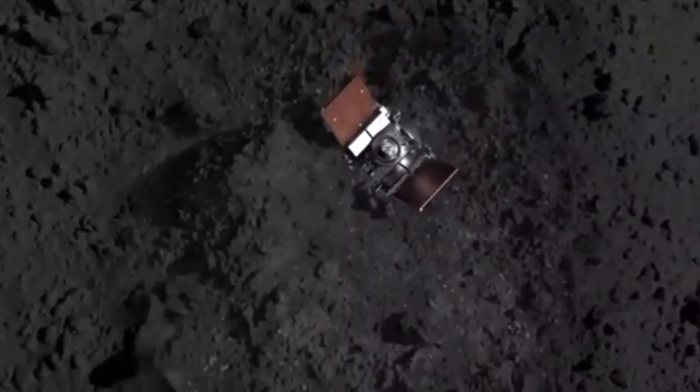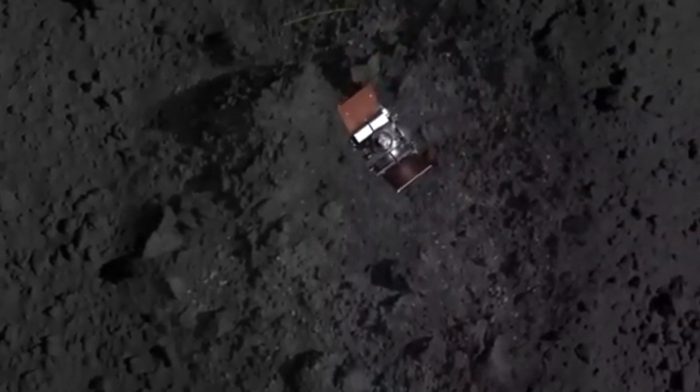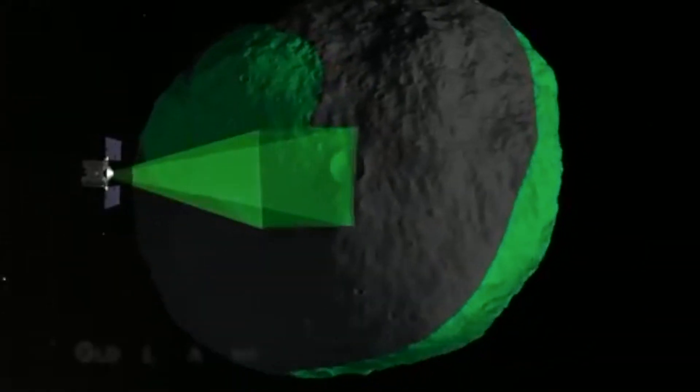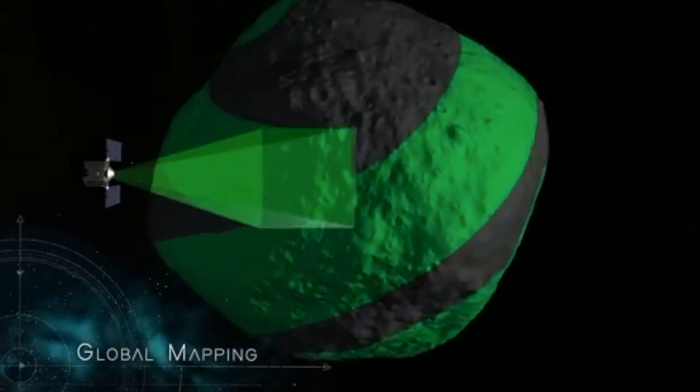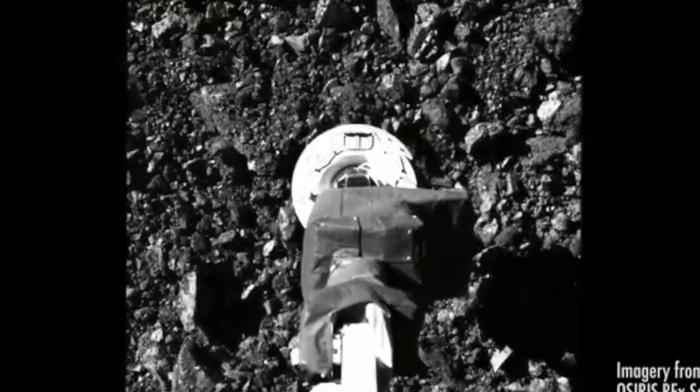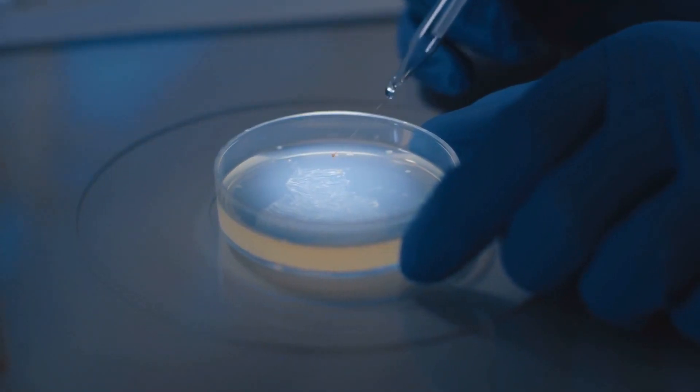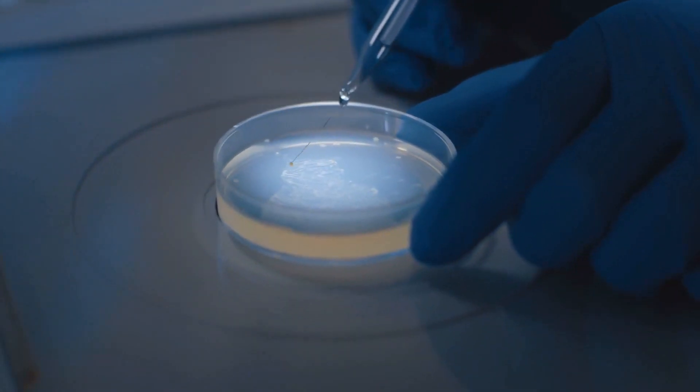When the spacecraft touched Bennu at a site called Nightingale, it used nitrogen gas to agitate and lift surface material into the sample collection chamber. Remarkably, during this nine-second contact, OSIRIS-REx collected 300 grams of sample, five times more than initially anticipated.